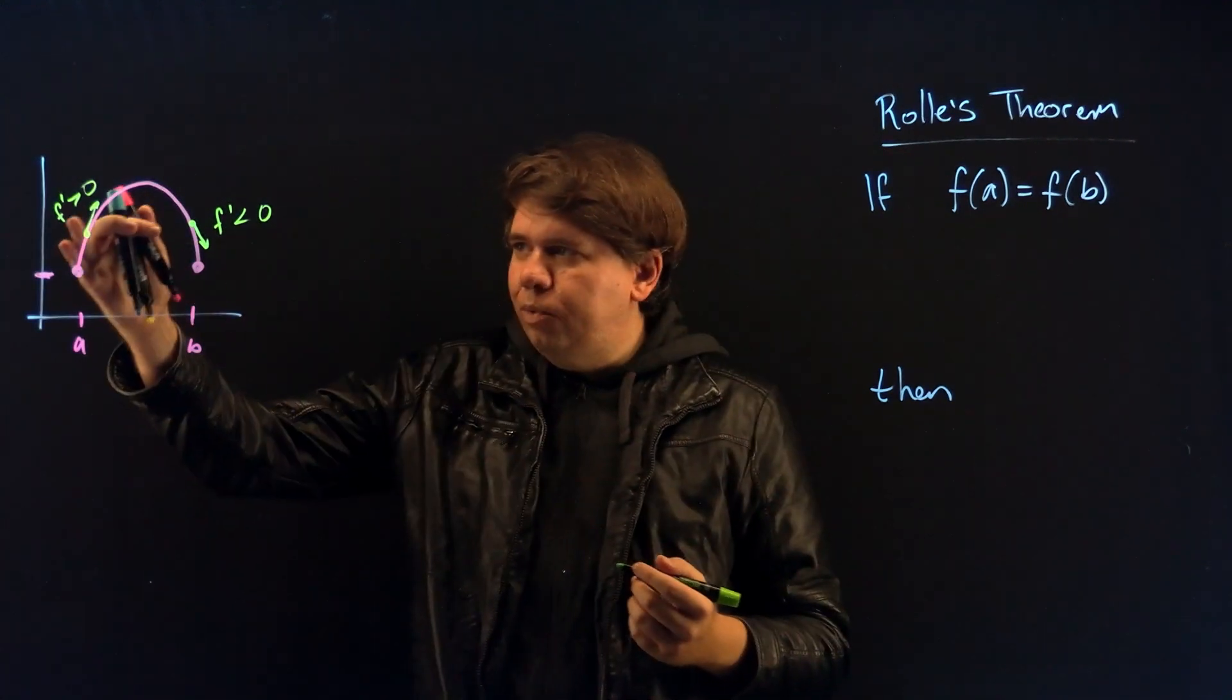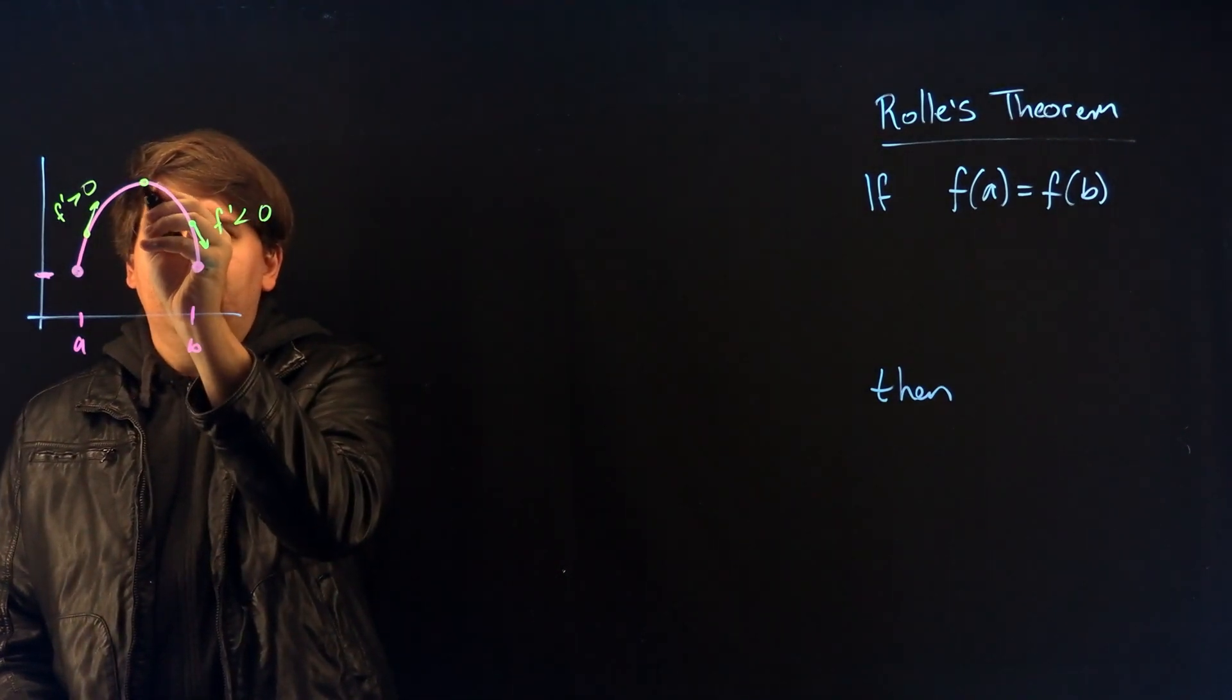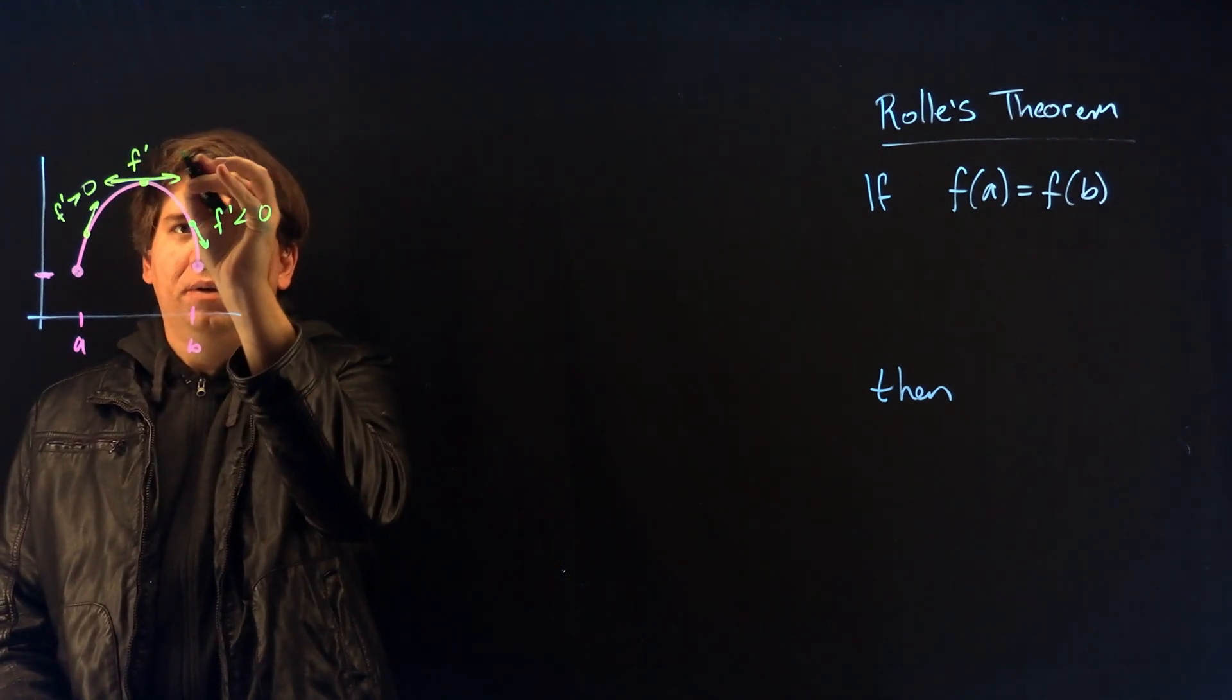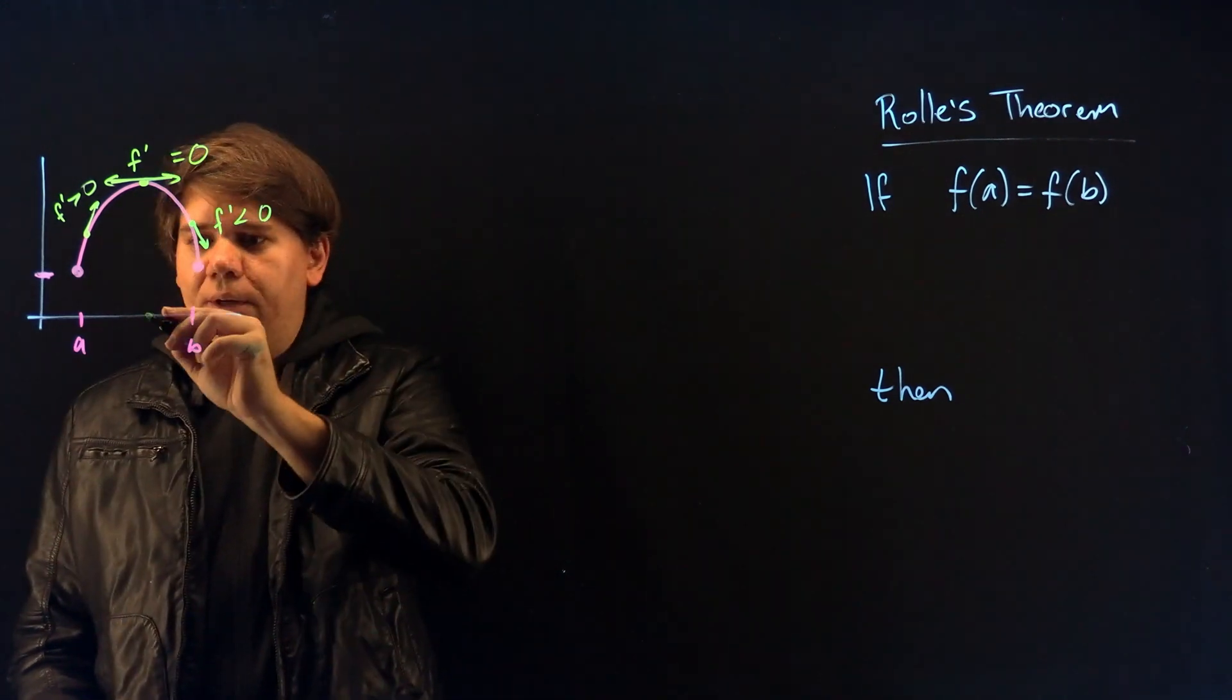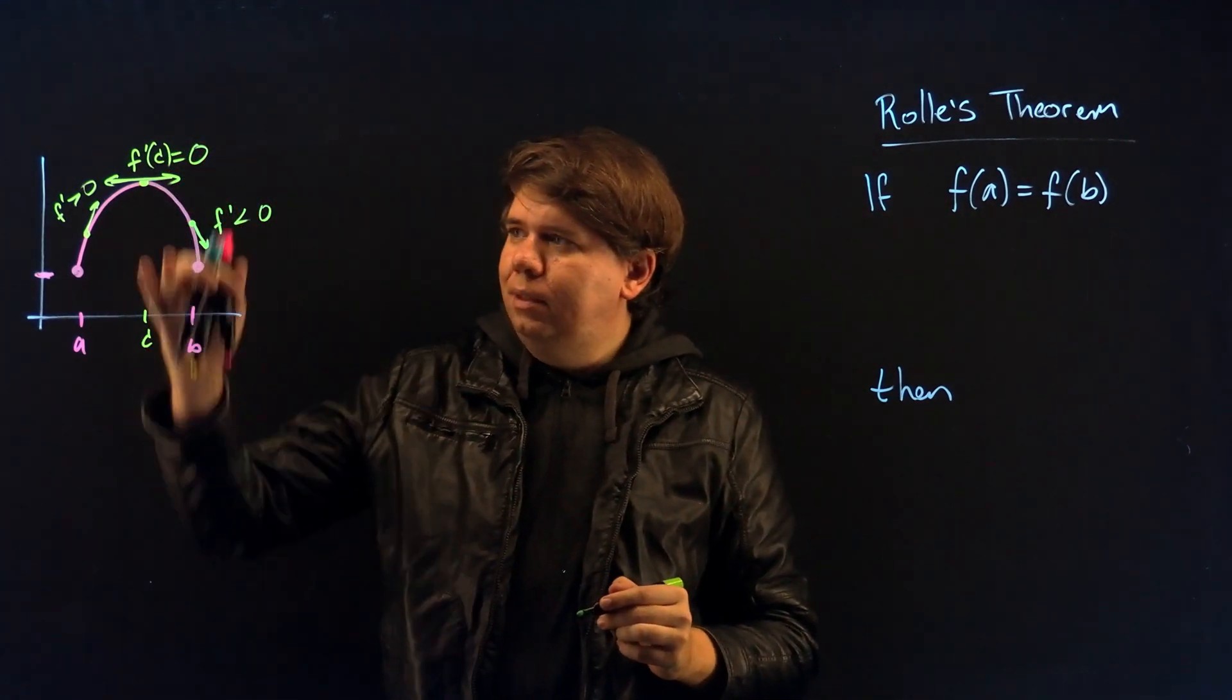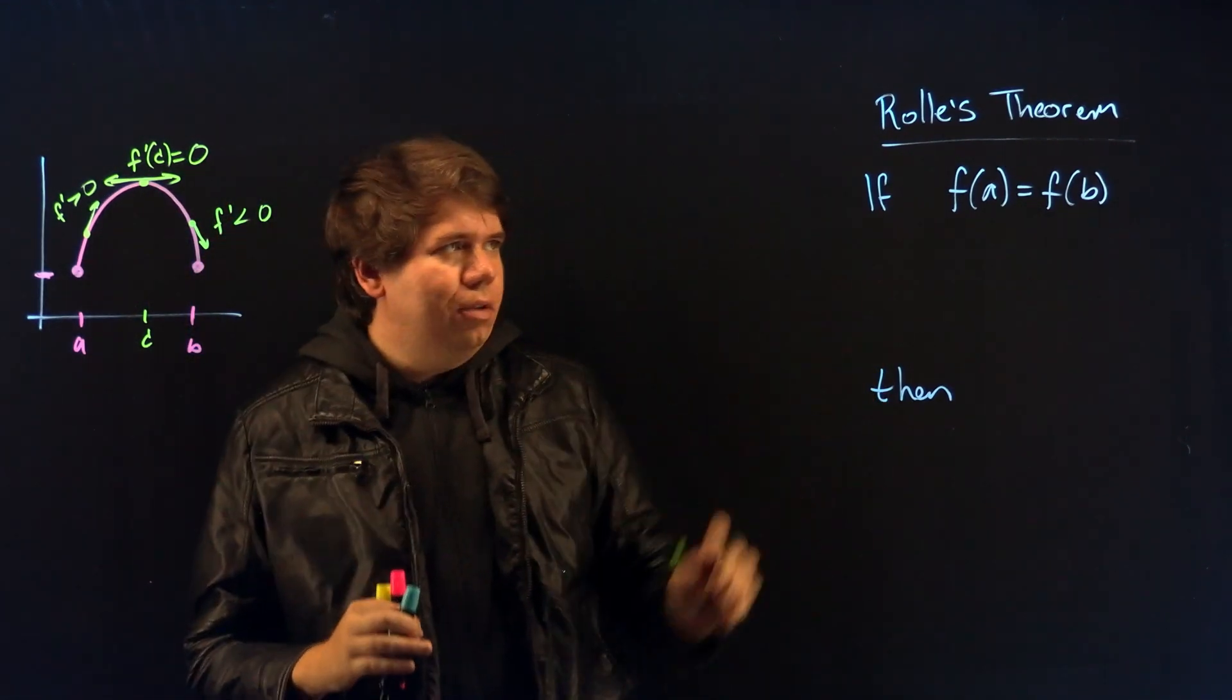Okay so there are places where it's increasing, there are places where it's decreasing, but you also have a special value right here at the top of this function. This value where your tangent line is horizontal which means your slope is zero. There's some special point here, some special point c. So if I calculate the derivative of my function at that point c it will be exactly zero. My tangent line is horizontal. And that's what Rolle's theorem is going to say.